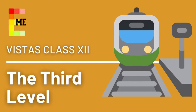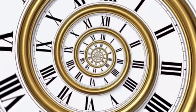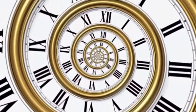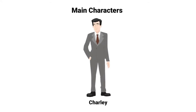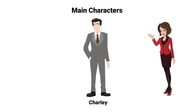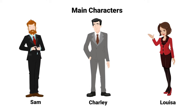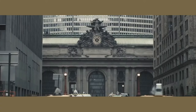Dear students, today I am here with the chapter 'The Third Level,' taken from the Vistas book of class 12th. This story is basically a science fiction that will leave you with a lot of unanswered questions. The main characters are: Charlie — an ordinary person who likes to collect stamps, desires a peaceful life, and goes to work like any regular person; Louisa — Charlie's wife; and Sam — Charlie's friend and psychiatrist, who plays an important role and adds a dimension to the story that justifies it as science fiction.